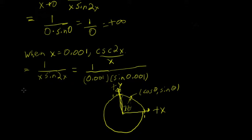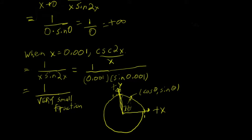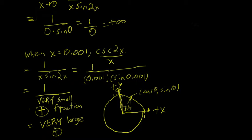So you'll have 1 over a very small but positive fraction. And 1 over a very small positive fraction is a very large positive number. That's when x is 0.001, so we're approaching 0 coming in from the right.